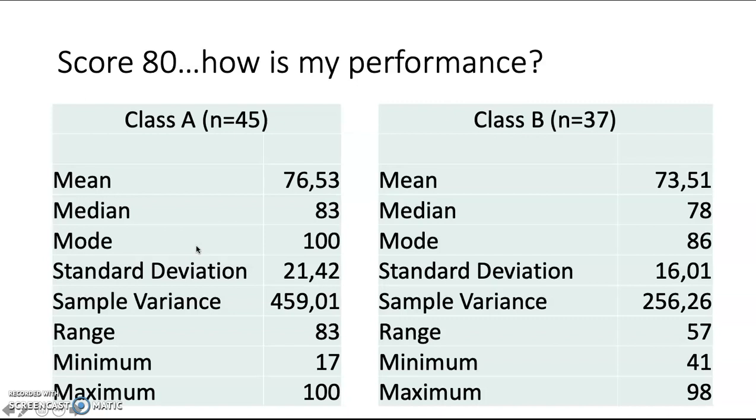So let's see the variation of results in my class and the other class. We can see here that the maximum score obtained in my class is 100 and the minimum is 17, resulting in a range of 83. Compared with the other class where the maximum is 98 and the minimum is 41, it does not differ too much, resulting in a range of 57.